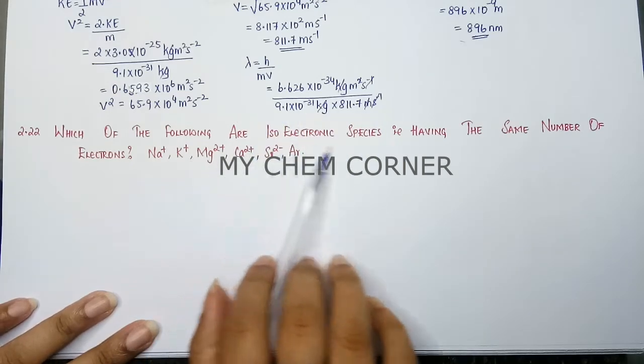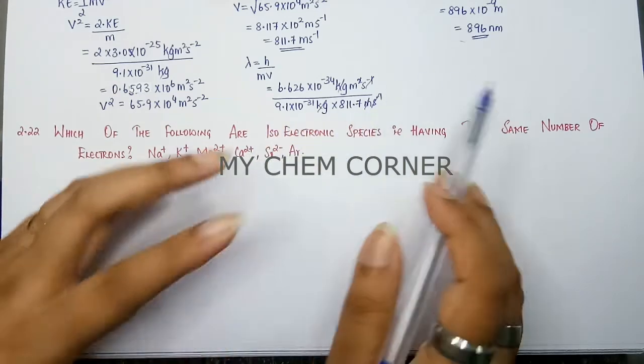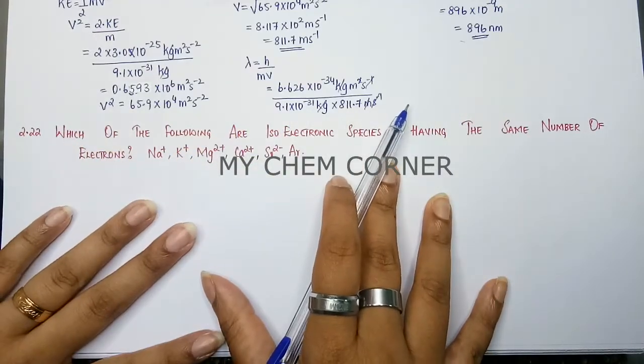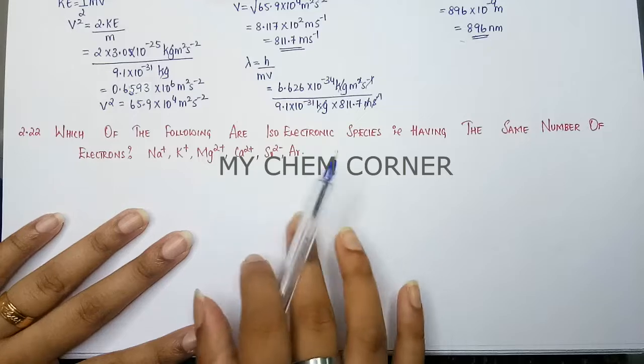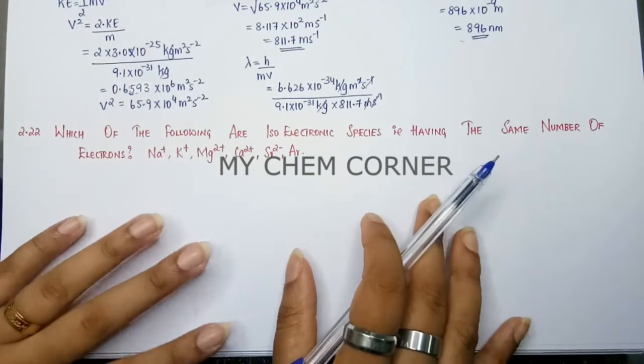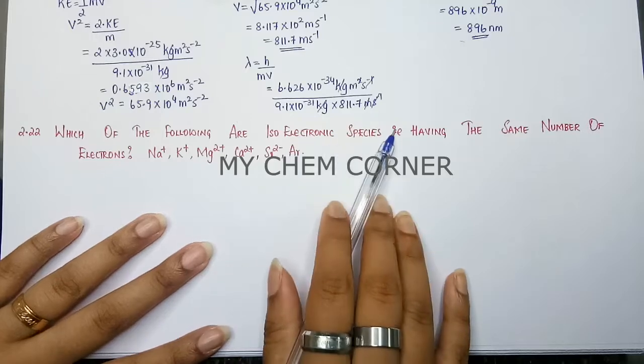First thing you need to understand is when you look at isoelectronic species, you take any element whether they are in the ionic state or neutral state, they should contain the same number of electrons. Such elements are called isoelectronic species.